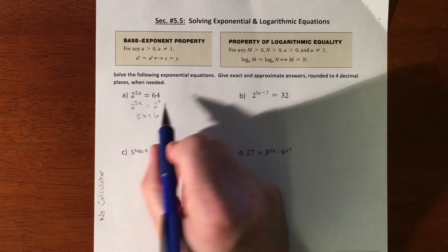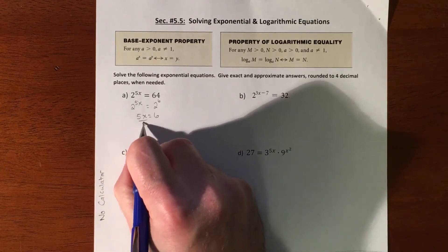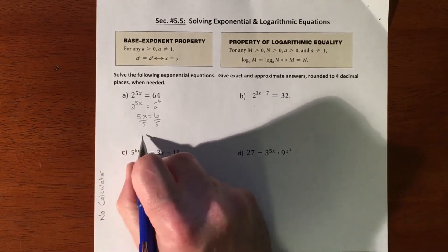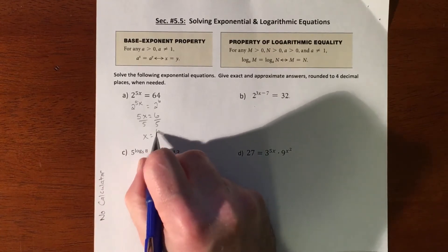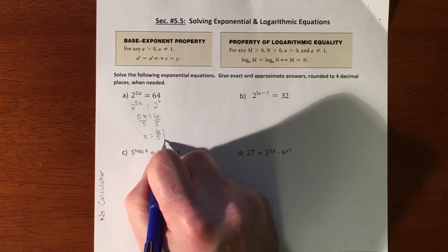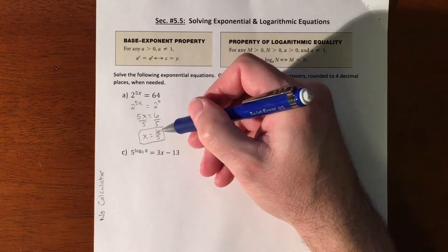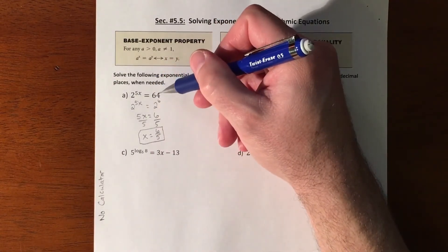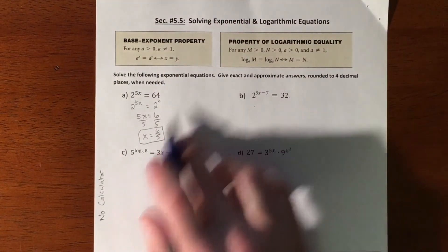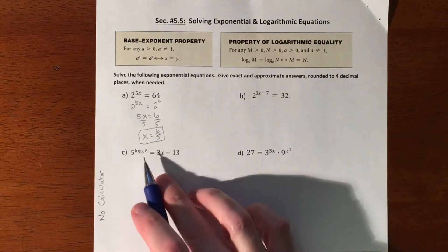Which really means you're just solving now that exponent needs to equal that exponent. So the bases become irrelevant once you make them match, and then we just do some math to get the x by itself. And x would equal six fifths. All right, so then you can plug that back in and see that it would get you 64.